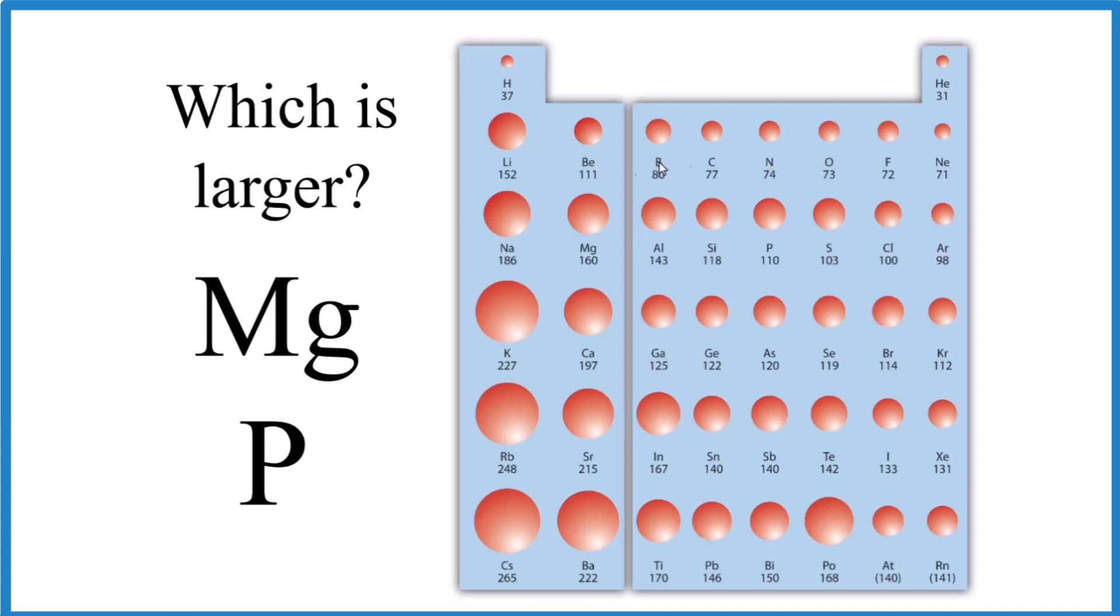If we look at the periodic table here, we can see the trends. I've taken out the transition metals just to make this more concise. They follow the same general trend.